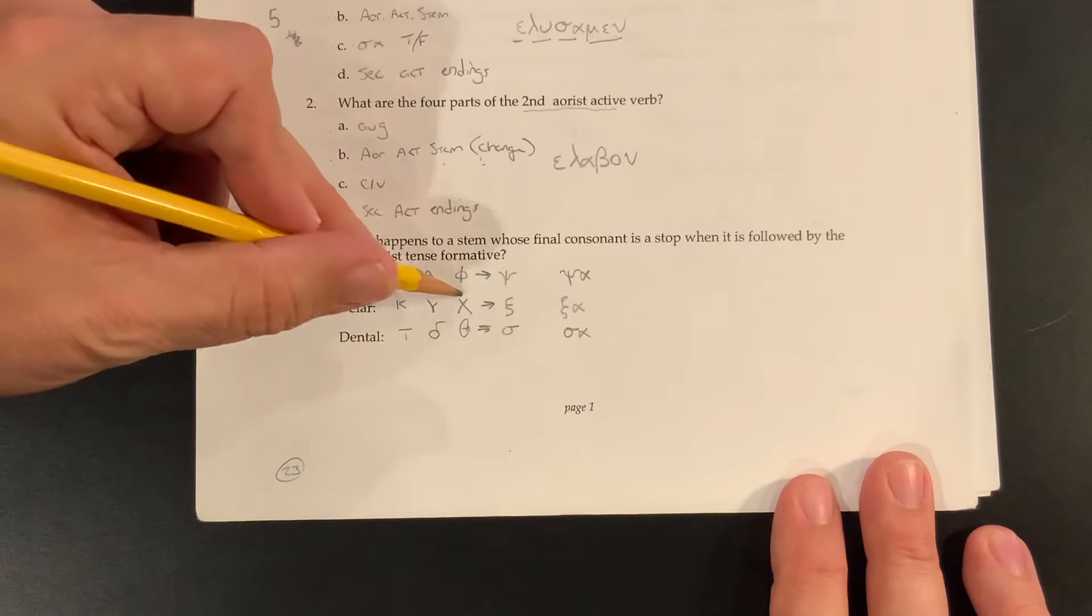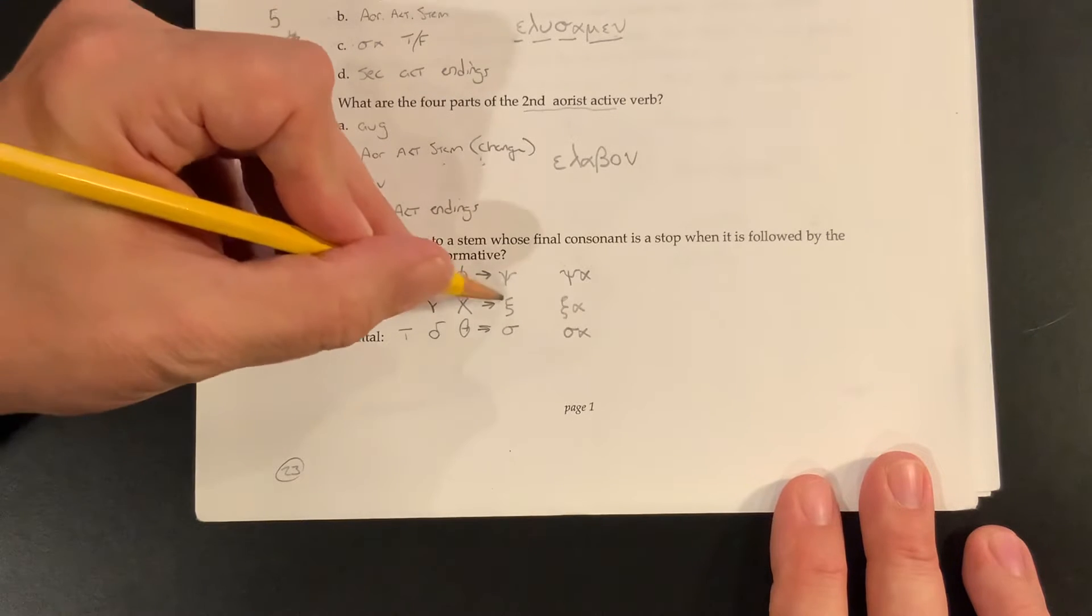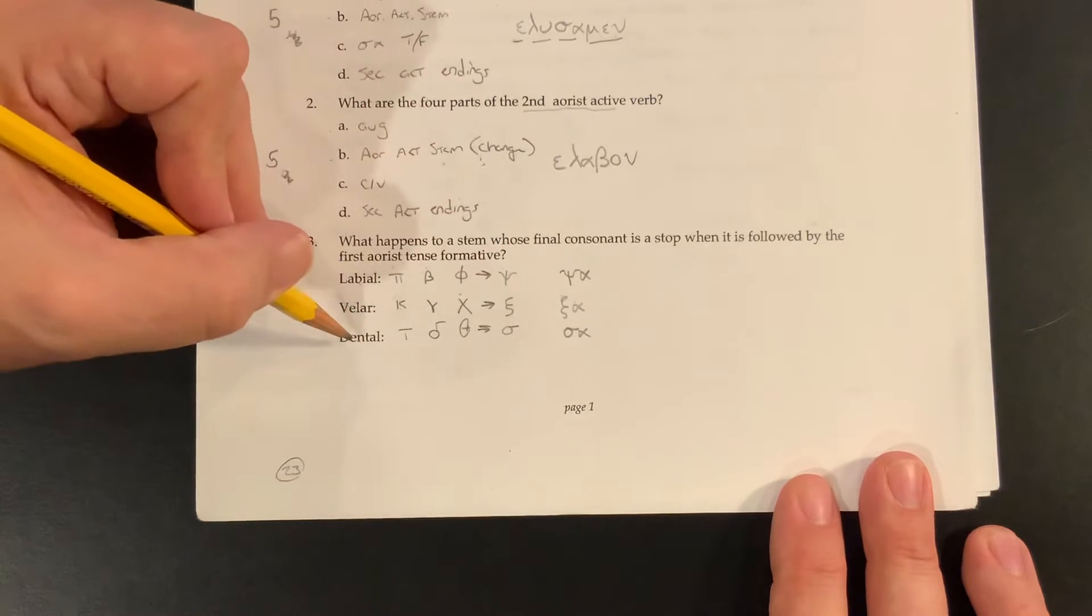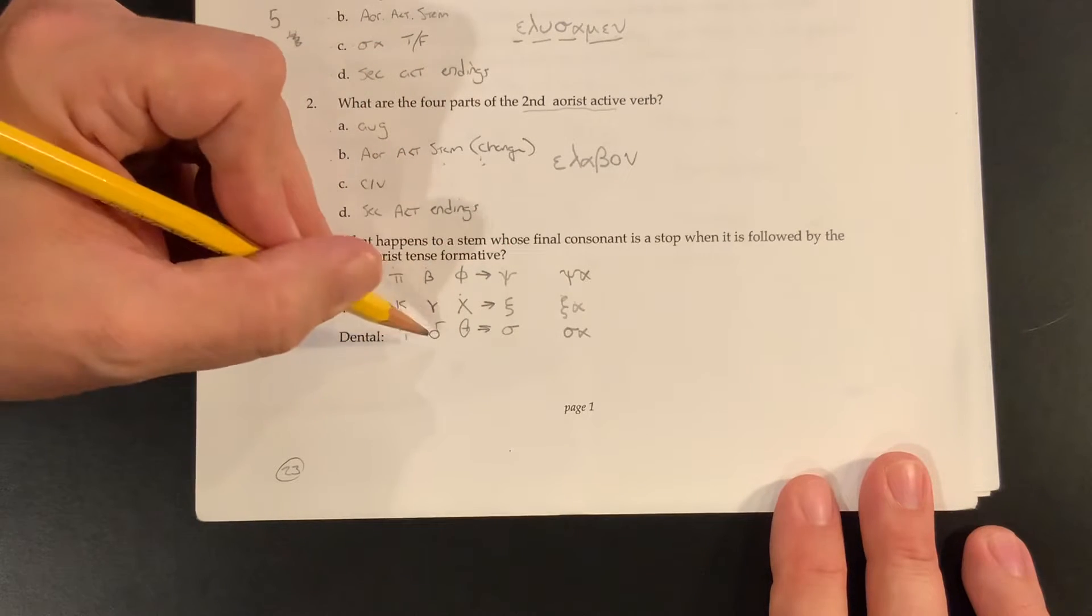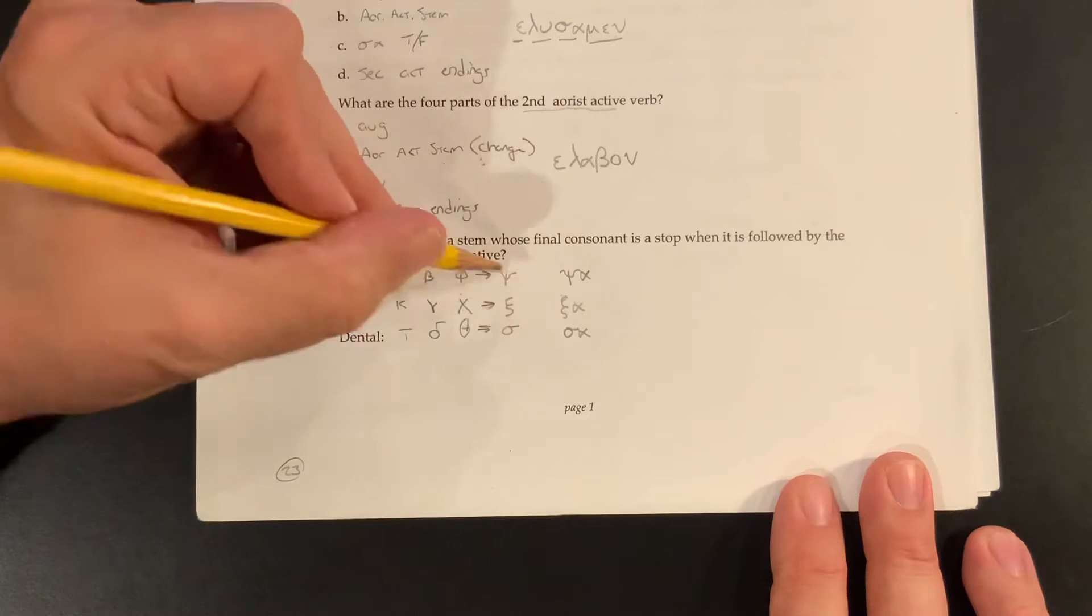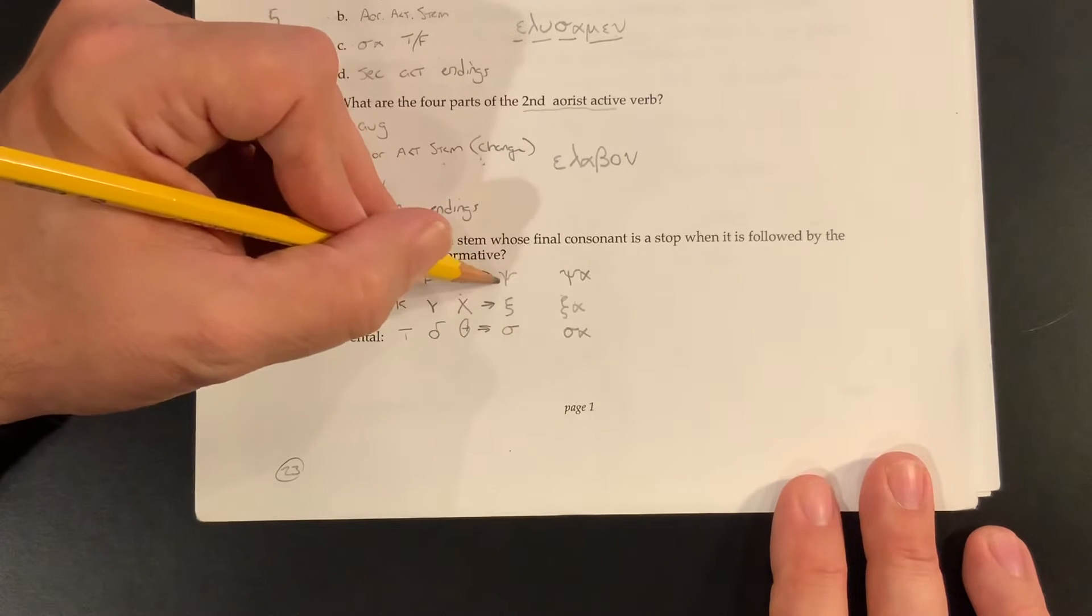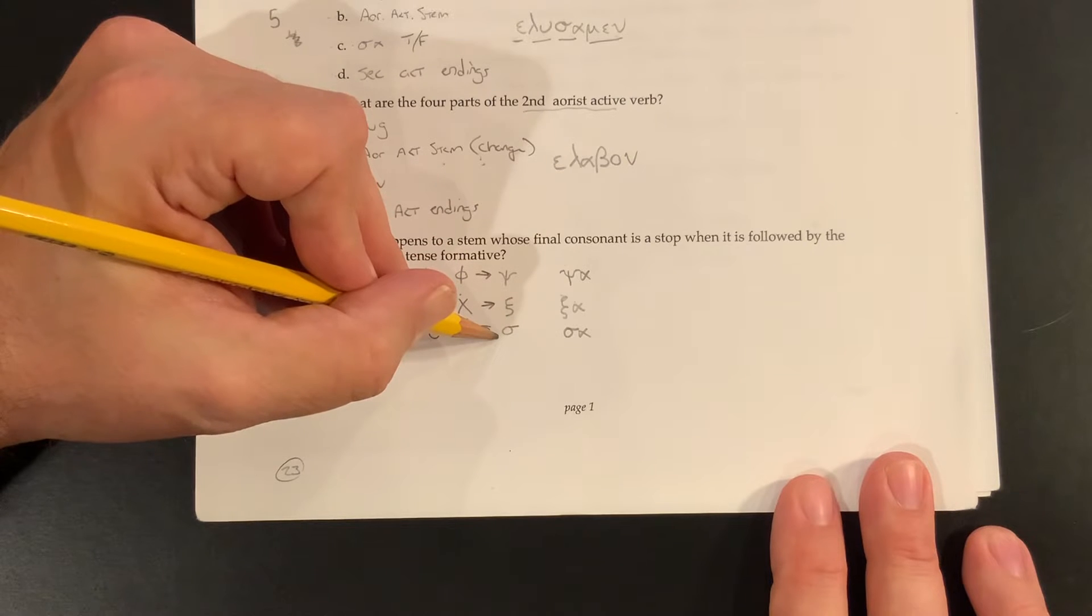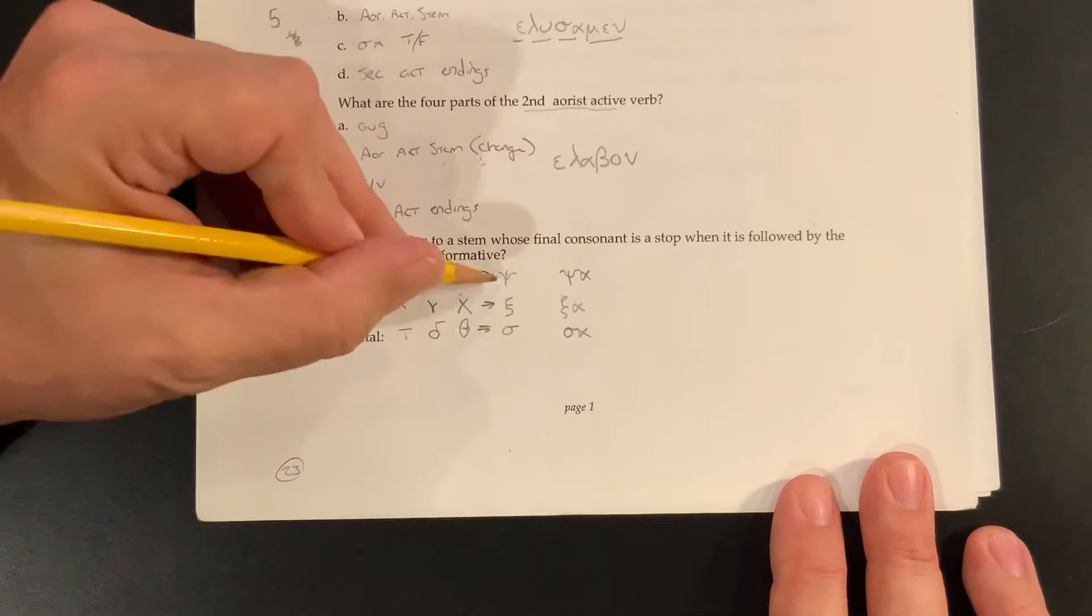And so it looks like psi. A kappa gamma or chi, a velar, turns into a xi, and it becomes xi. And then a dental drops out, tau delta theta drops out, and we just get the sigma. So we're just looking for these on this. We're just looking for psi, xi, sigma. And that's really all you really need for this one.